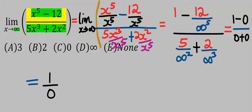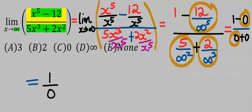Next, you take the limit of this remaining function. Any number that divides infinity is zero. Likewise, 5 divided by infinity squared is zero, and 2 divided by infinity to the power of 3 is zero. Hence, zero plus zero is zero.